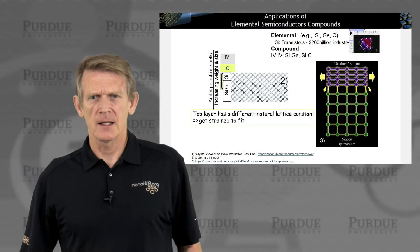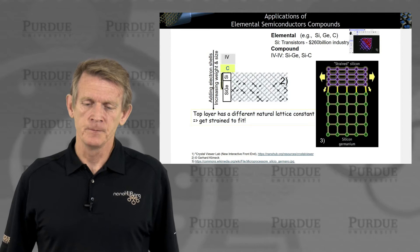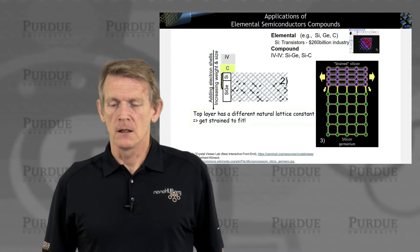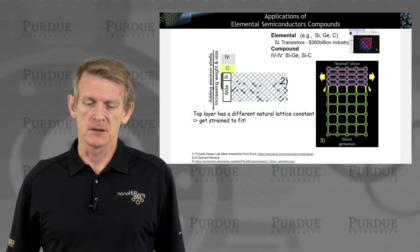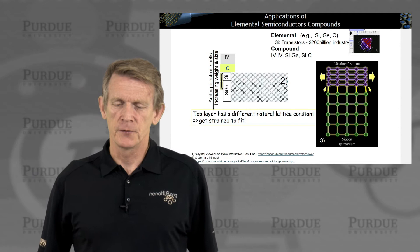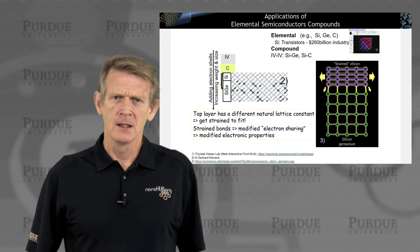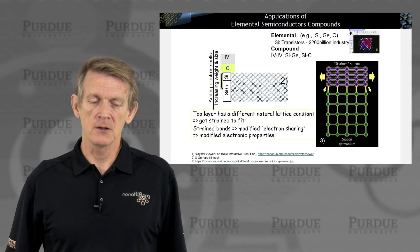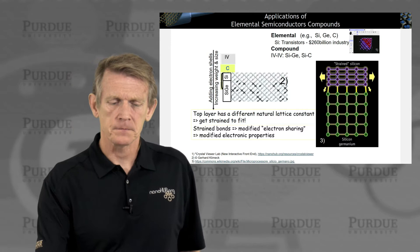Why do we care about these different lattice constants? It's really being used in technology today. There's a sketch showing how you can strain silicon on top of silicon germanium. In green, you have a pictogram of homogeneous silicon germanium with a larger lattice constant acting as a substrate. If you grow silicon on top, the silicon has to stretch itself to fit the substrate. This controlled strained silicon is used to improve electrical properties — because if you change the bond length, you change how electrons are shared and modify the electronic properties of the material, achieving better transistor performance.